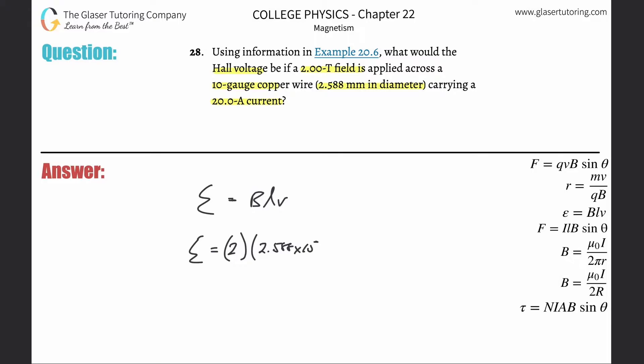Now we need the velocity, but we don't have the velocity. What do we have instead? We have the current. So somehow we have to relate current to velocity, and the only way to do that is by talking about the drift velocity.